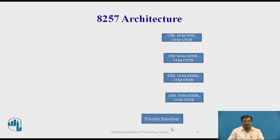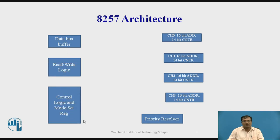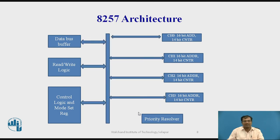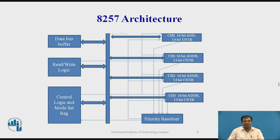Then there is one priority resolver. There is one unit called data bus buffer and read/write logic. Then control logic and mode set register. These are the different components and they are connected in this way. This is the internal bus.